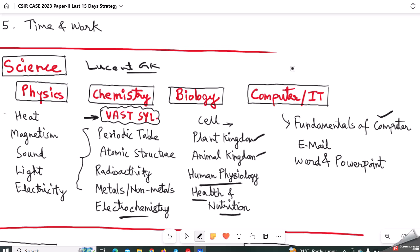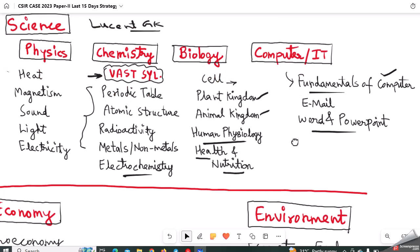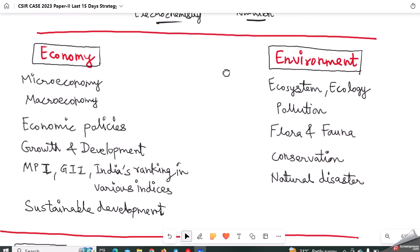As far as computer and information technology is considered, you should be aware of the fundamentals of computers. Fundamental itself carries a whole lot of meaning here - everything is covered, from evolution of computer to functions of computer, CPU, ALU, how computer works, hardware, software, some important computer languages, Wi-Fi, LAN - everything is covered. Then just read about basics of email, Word, and PowerPoint. That will do in science portion. Science is very scoring, but chemistry has vast syllabus. Try to complete physics, biology, and computer topics in remaining days.